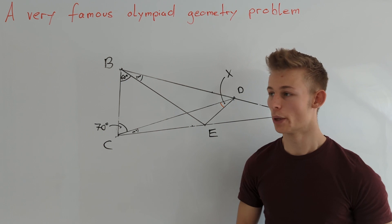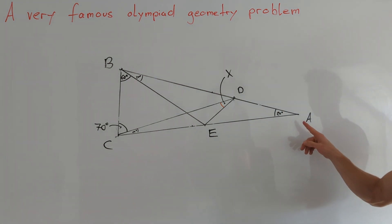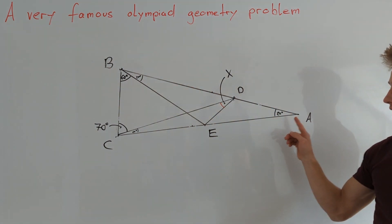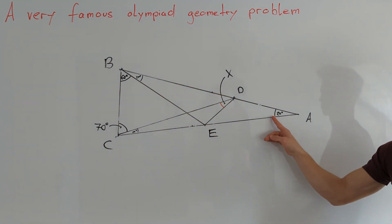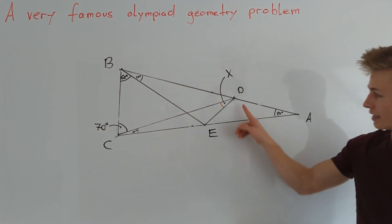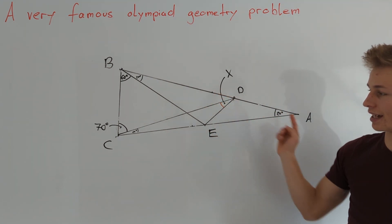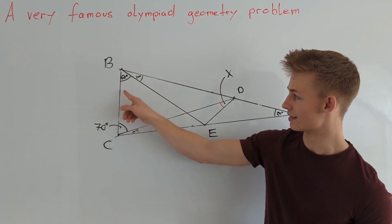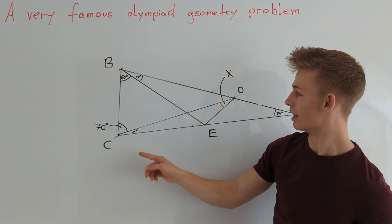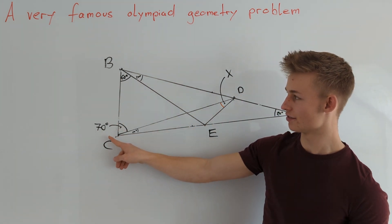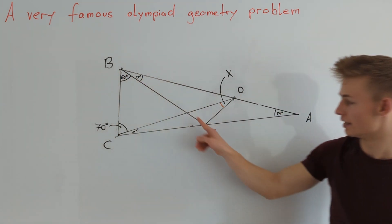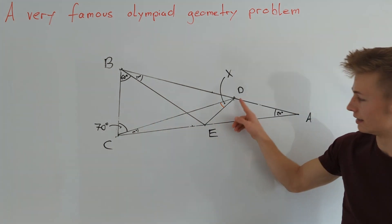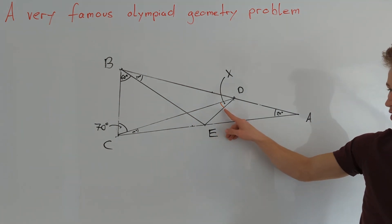At first let's have a look at the picture. We are given an isosceles triangle ABC such that the angle BAC is equal to 20 degrees. We choose points D and E on sides AB and AC such that angle DCB is equal to 70 degrees and angle CBE is equal to 60 degrees. We are asked to find the angle CDE, which I marked in orange and call X.